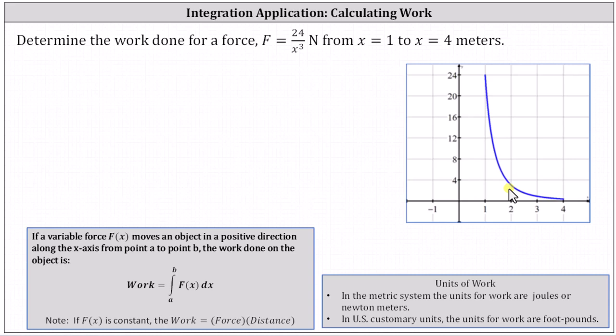In this case, the work done is equal to the integral from a to b of f of x dx, where the limits of integration from a to b are from x equals one to x equals four, which indicates the work done, w, equals the integral from one to four of, let's write 24 divided by x cubed as 24 x to the power of negative three dx.